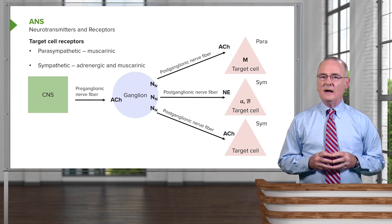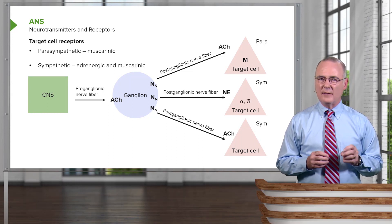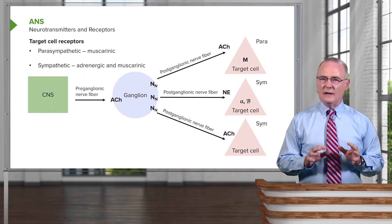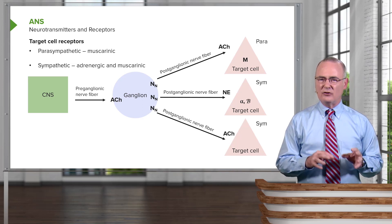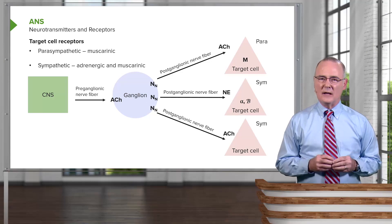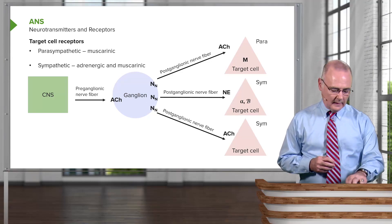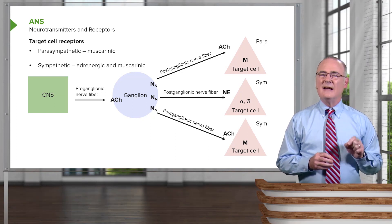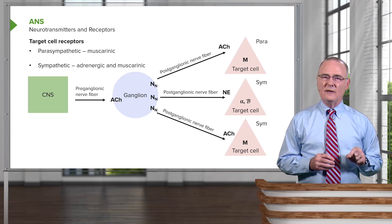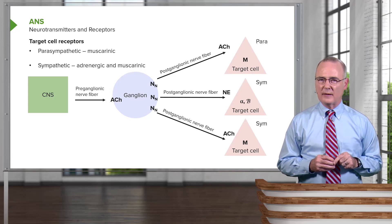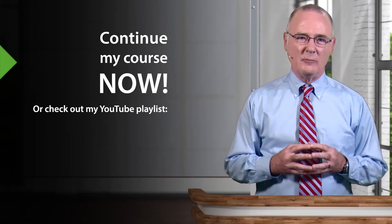In the case of the postganglionic sympathetic nerve fiber — again, this would be most of them — with norepinephrine being released, the target cell will have adrenergic receptors, alpha or beta, or may have a combination of both. In the case of the sympathetic postganglionic nerve fiber releasing acetylcholine, that target cell will also have the same muscarinic receptor as the parasympathetic target cell.